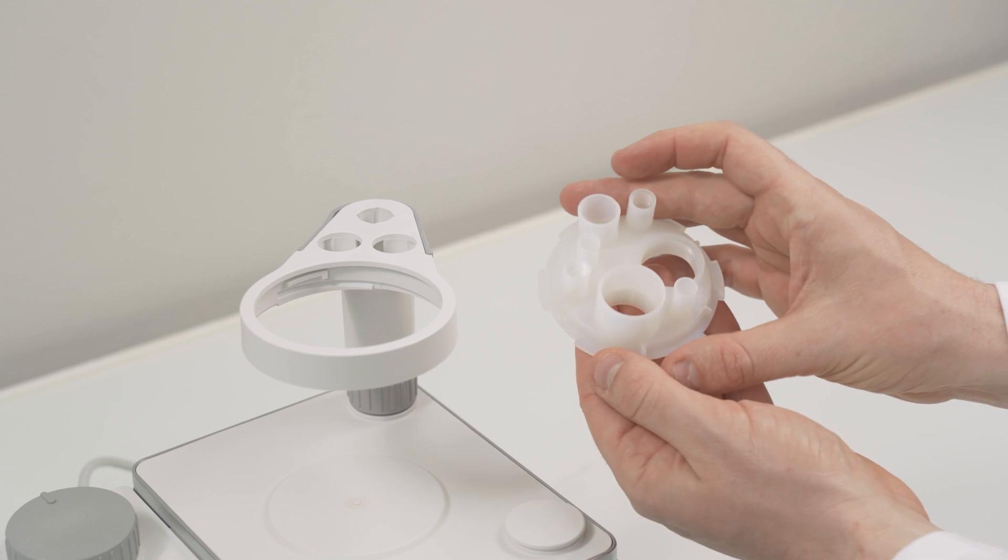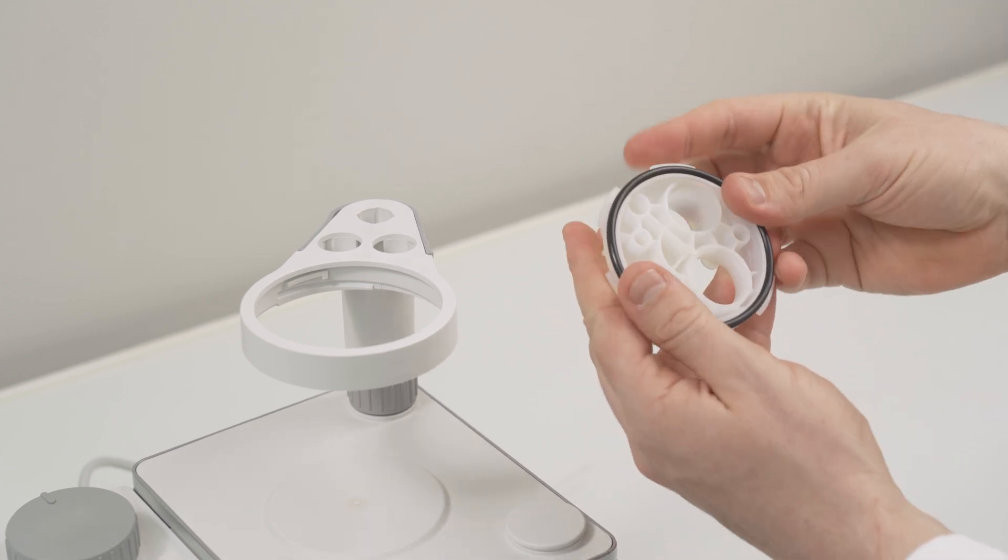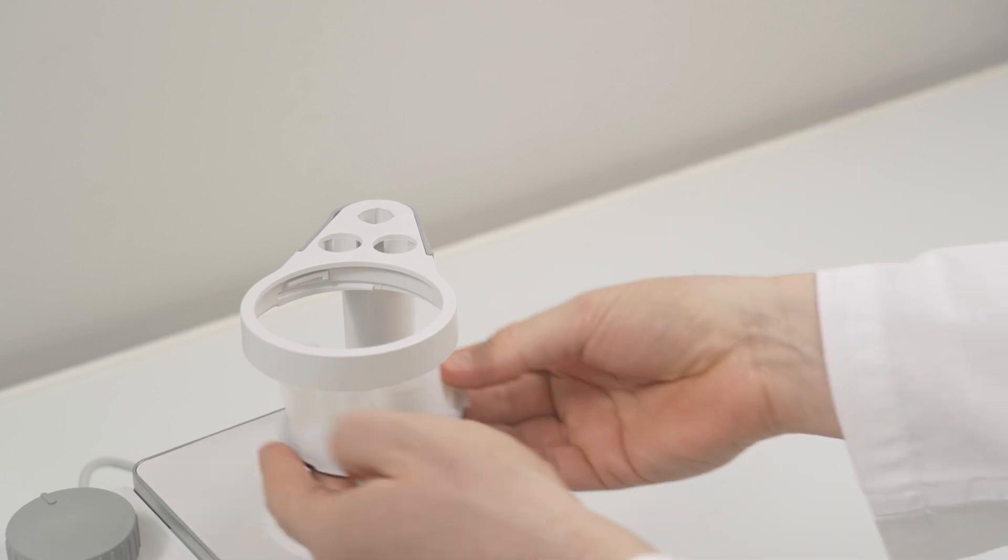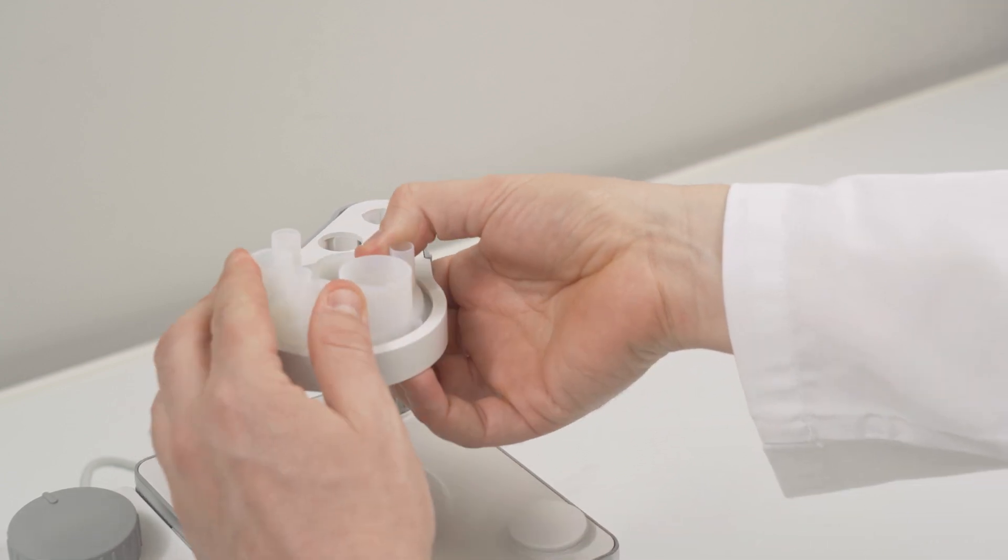Take the adapter plate and attach the black rubber seal. Move it into the titration arm and rotate it clockwise until it's fixed. Check the orientation of the adapter plate. The largest opening should point towards you.